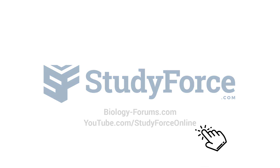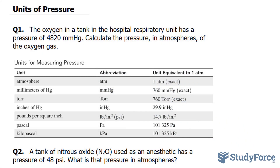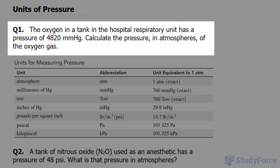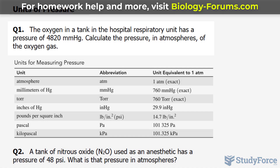In this short tutorial, we'll discuss the units of pressure. The question reads: the oxygen in a tank in the hospital respiratory unit has a pressure of 4820 mmHg.